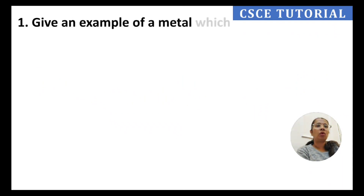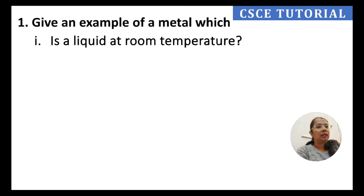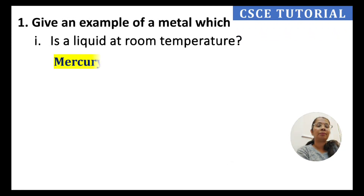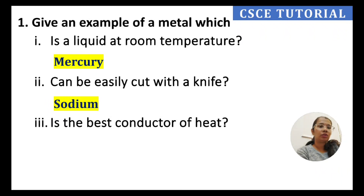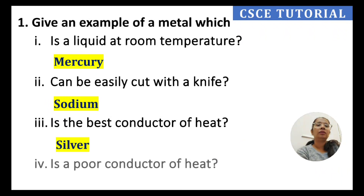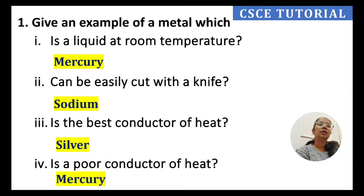The first question asks for examples: a metal which is liquid at room temperature — that is mercury. A metal which can be easily cut — that is sodium. The best conductor of heat among metals is silver, while the poorest conductor of heat among metals is mercury.